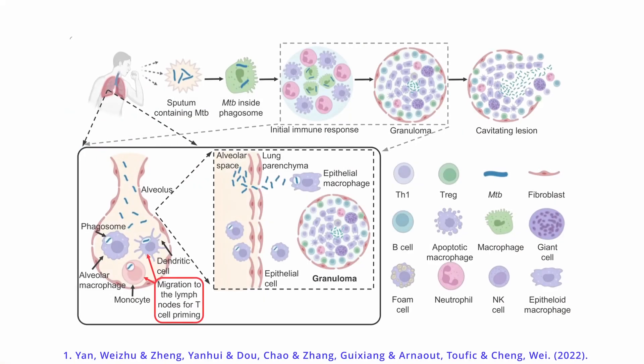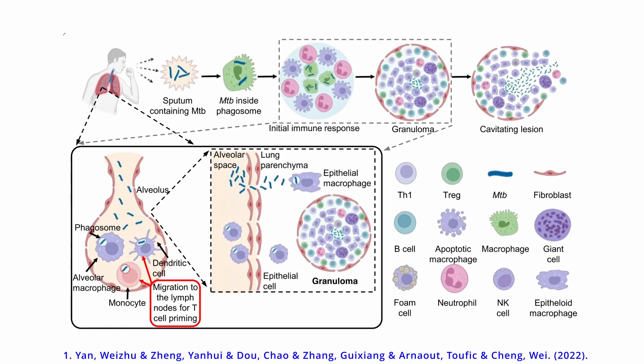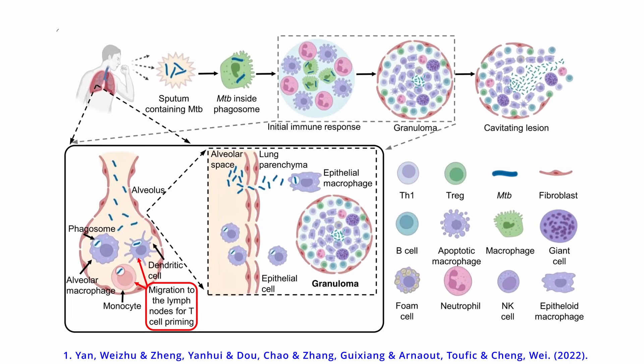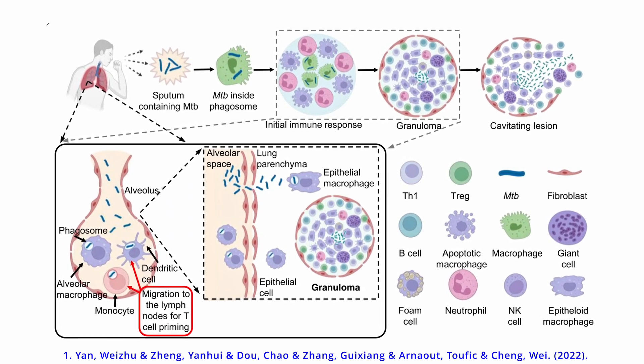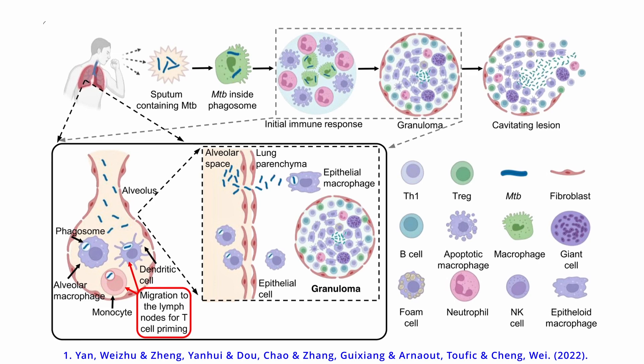TB is transmitted from person to person through aerosol, mostly in public spaces when a person sneezes. Once it enters the body, it is taken up by the host macrophages where it replicates. The host comes up with a mechanism to contain the infection by surrounding it with other immune cells, eventually coming up with a structure called granuloma.